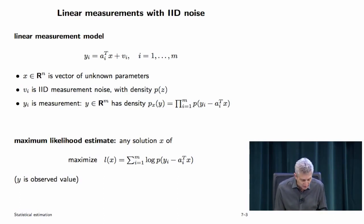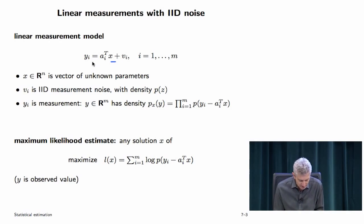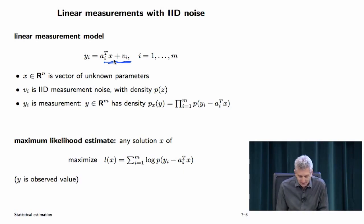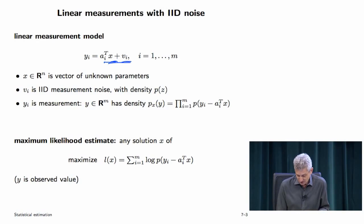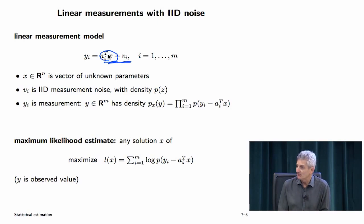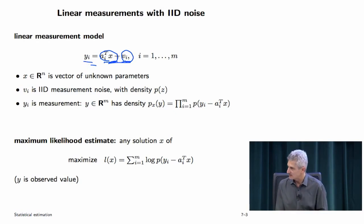Let's start with linear measurement models. Here, x is a vector of unknown parameters and we have linear measurements: y_i is a scalar, it's a linear function of x plus noise. This is a good point to discuss the philosophical view of the setup. If you're in signal processing, you'd say this gives you the ideal measurement if your sensors were perfect; v_i is added noise — your corrupted real measurement.